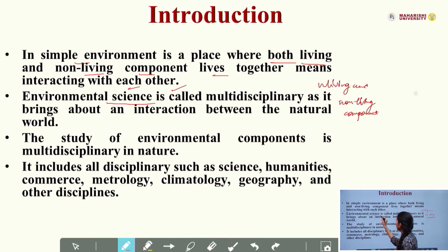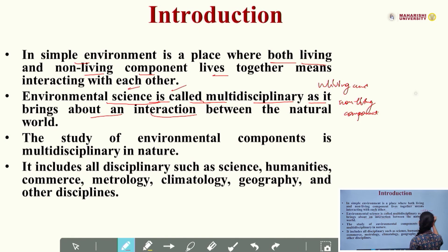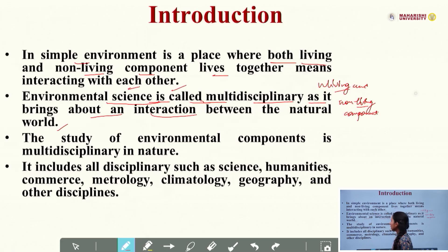So what is environmental science? Environmental science is called multidisciplinary. And why is it called multidisciplinary? Because various disciplines come under this. Environmental science is called multidisciplinary as it brings about an interaction between the natural world, as we discussed earlier with living and non-living components. The study of environmental components is multidisciplinary in nature.